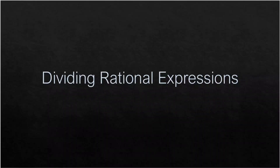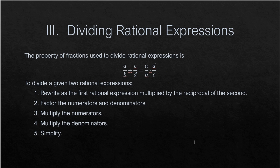Now we proceed to dividing rational expressions. Just like fractions, the rules for the division of rational expressions is basically the same. We rewrite the first rational expression multiplied by the reciprocal of the second. That means if we have A over B divided by C over D, we simply need to rewrite it accordingly.